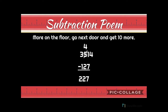The next part is "more on the floor, go next door and get ten more." Here we started with a four in the ones place on top and a seven in the ones place on the bottom. This number is bigger, which means we needed to come to the five and take a ten from the tens place, so we only have four tens left. We squeeze that one right in front of the four to make it 14, because we're borrowing one group of ten — not a one. So now 14 minus seven is seven. Four minus two is two, and three minus one is two.